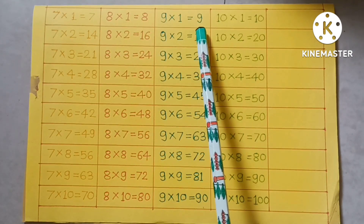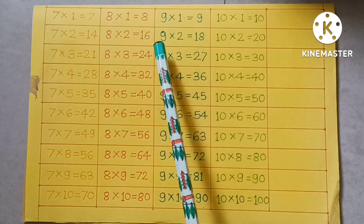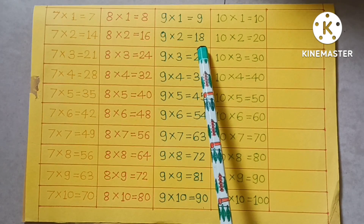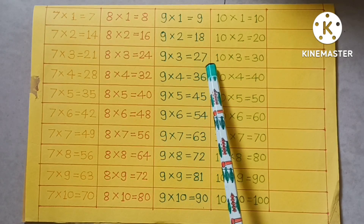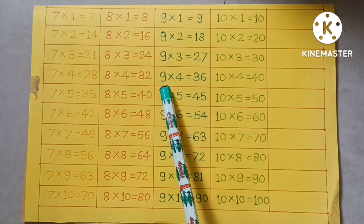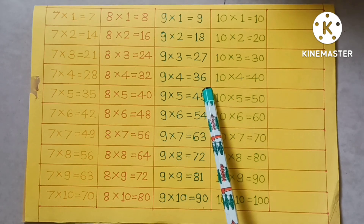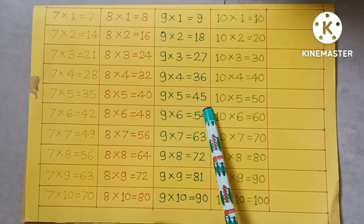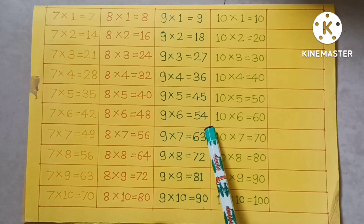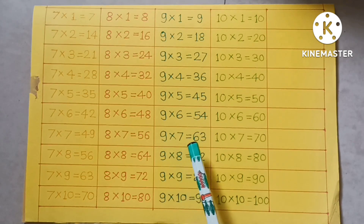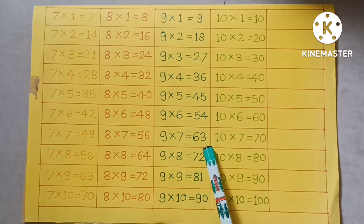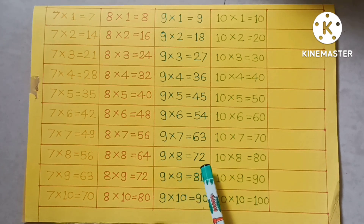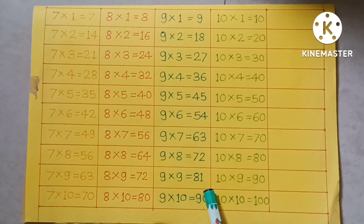9×1=9, 9×2=18, 9×3=27, 9×4=36, 9×5=45, 9×6=54, 9×7=63, 9×8=72, 9×9=81, 9×10=90.